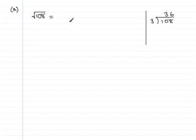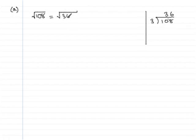That's telling me that the square root of 108 is exactly the same as the square root of 36 times 3, since 36 × 3 is 108.